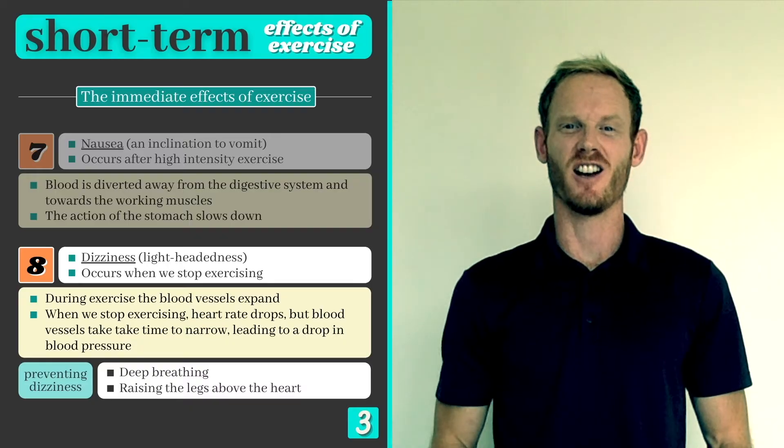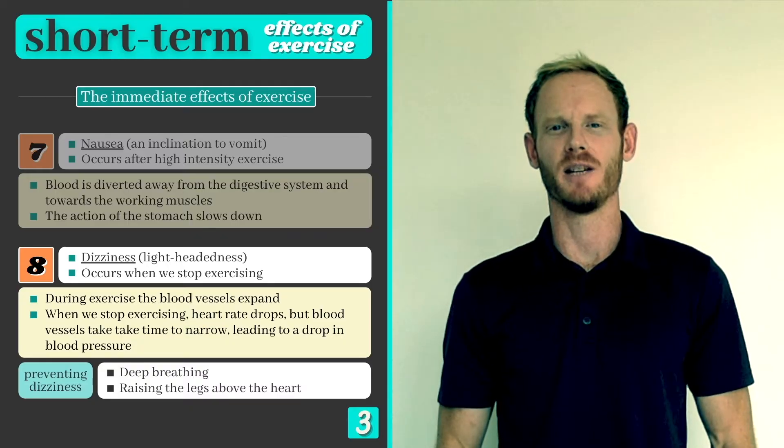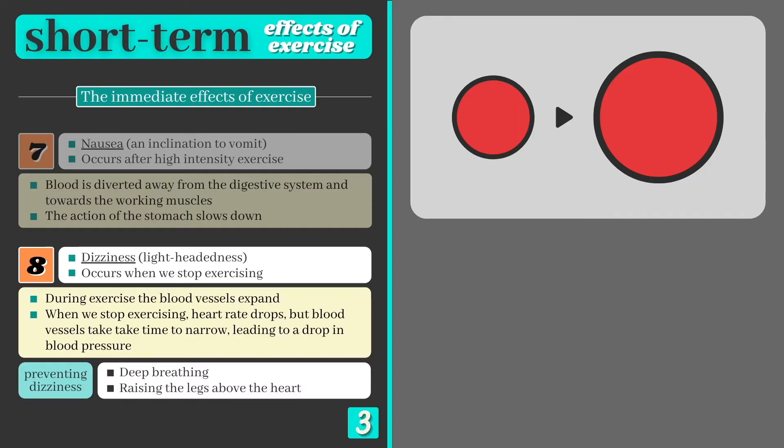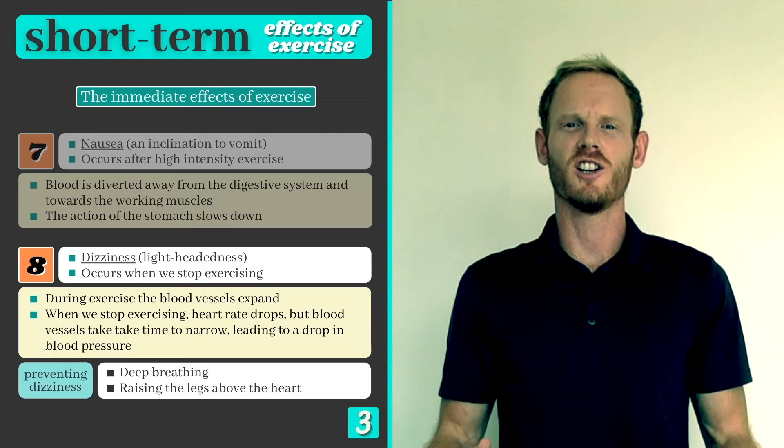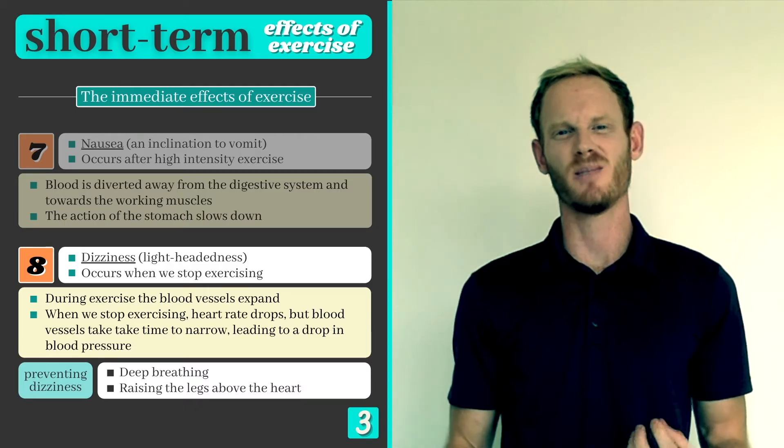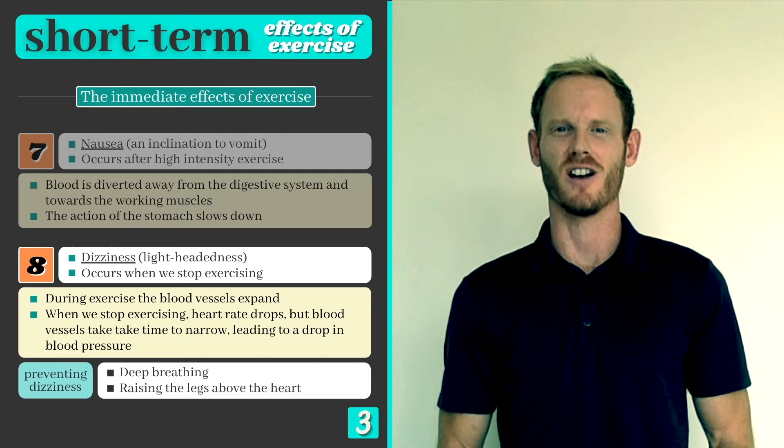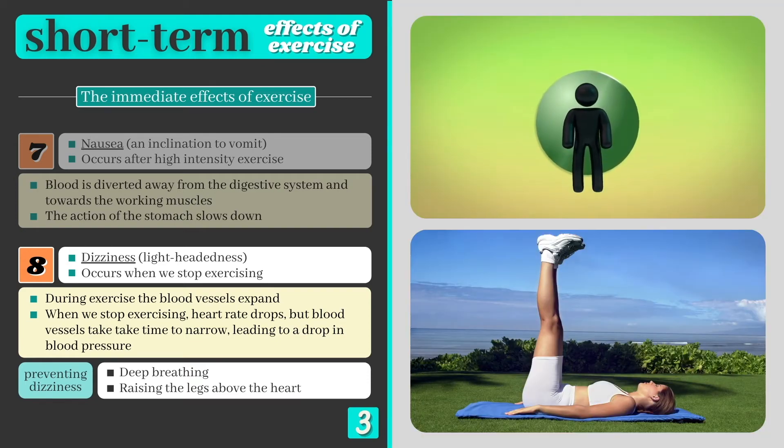Our final short term effect of exercise is light headedness or dizziness. We know that during exercise the heart works harder to pump more blood around the body, and this causes the blood vessels to enlarge to allow for the stronger blood flow. Heart rate drops when you stop exercising, but your blood vessels may take longer to return to their normal size, resulting in a reduction in blood pressure. This slows down the transportation of blood to the brain as it has to fight against gravity, causing us to feel dizzy. Fortunately, there are some simple techniques that can be used if you experience this effect after exercise. Deep breathing increases the amount of oxygen entering the body, while lying down and elevating your legs helps the blood that's collected there to flow back to the heart, where it can be redistributed throughout the body.